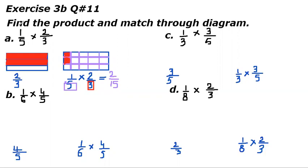Now we will read the question: find the product and match through diagram. The product is two upon 15. This product is matching with the diagram because the denominator is 15 — these small boxes total 15 — and only two are colored. Two boxes are colored out of 15, so this diagram matches the product.